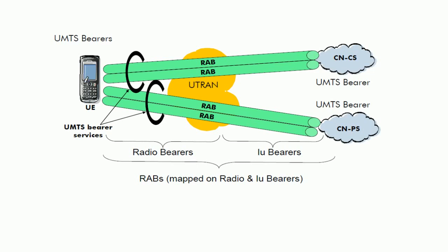A mobile may be assigned more than one RAB for more than one service it is using. For example, a mobile can have two RABs from the circuit switched core network and two RABs from the packet switched core network. Each RAB is further supported by or mapped into a radio bearer from UTRAN to the user equipment and an IU bearer from UTRAN to the core network.